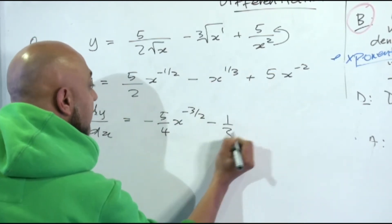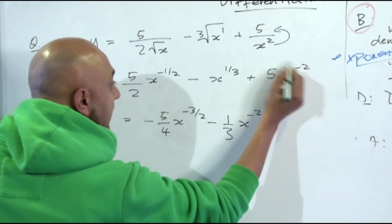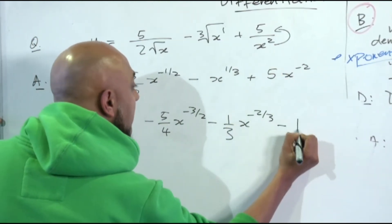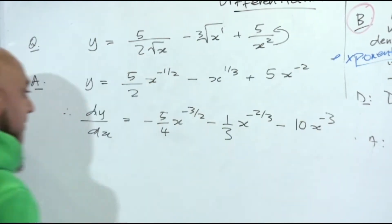Minus a third times 1 is a third, x to the power a third minus 1 is minus 2 over 3. Negative times positive is negative, 2 times 5 is 10, x to the power minus 2 minus 1 is minus 3.